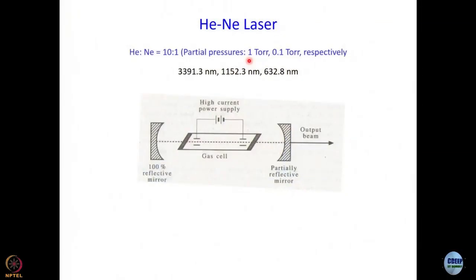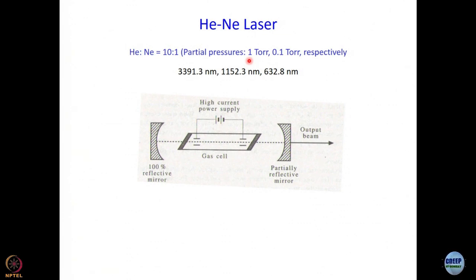The same HeNe laser usually would not give you all the wavelengths. If you want a 3391.3 nm laser you have to make a dedicated 3391.3 nm laser — a 632 nm laser will not give you the other wavelengths. Let us see if you can understand and arrive at the answer to this question by the end of this module.